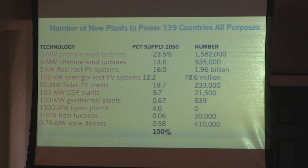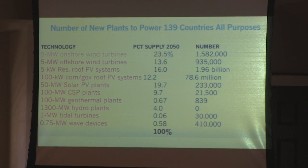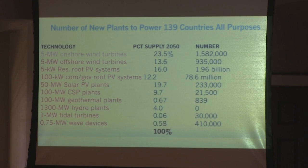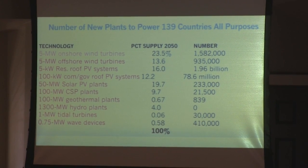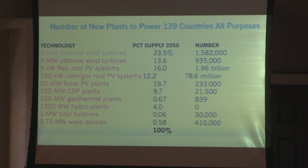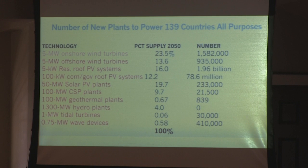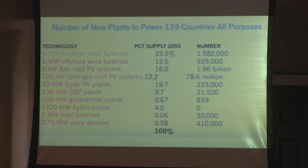We did energy plans for all 50 U.S. states and 139 countries. To power the entire planet for 139 countries — representing more than 99% of all emissions worldwide — you would provide: 23.5% with onshore wind, 13.6% with offshore wind, about 16% with residential rooftop solar, 12% with commercial/government rooftop solar, about 20% utility-scale solar, about 10% concentrated solar power, less than 1% geothermal, 4% hydroelectric, and a tiny amount of tidal and wave power.